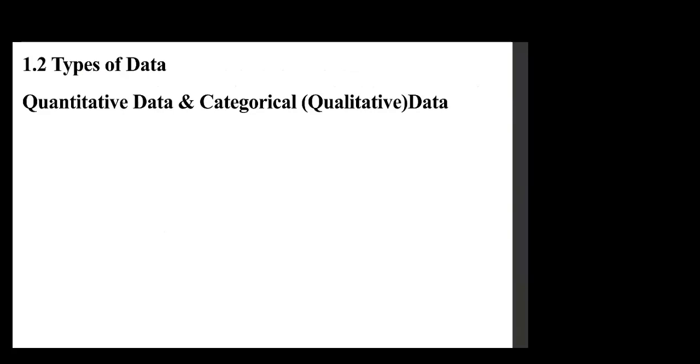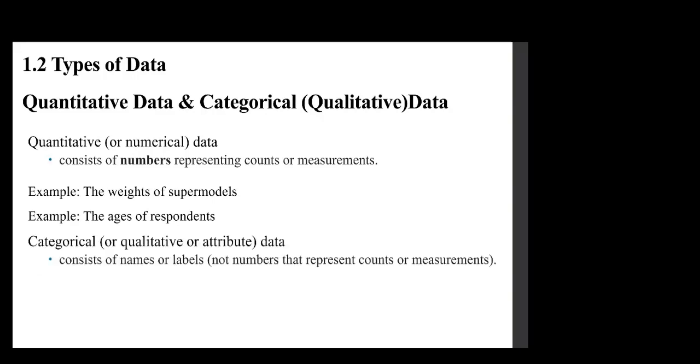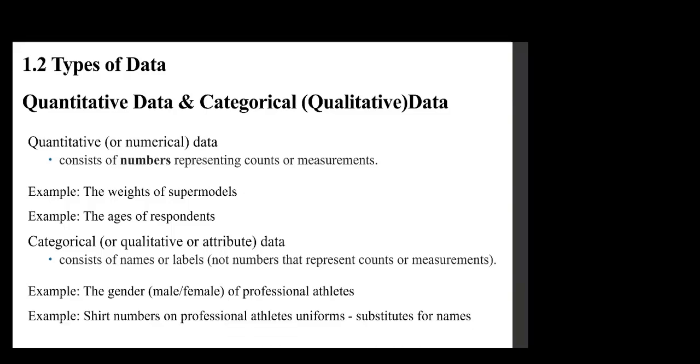Quantitative versus qualitative. We want to discuss that. Numerical data consists of numbers representing counts or measurements, and so obviously examples such as weights or ages. Categorical or qualitative or attribute data consists of names or labels, not numbers that represent counts or measurements. Examples like genders.